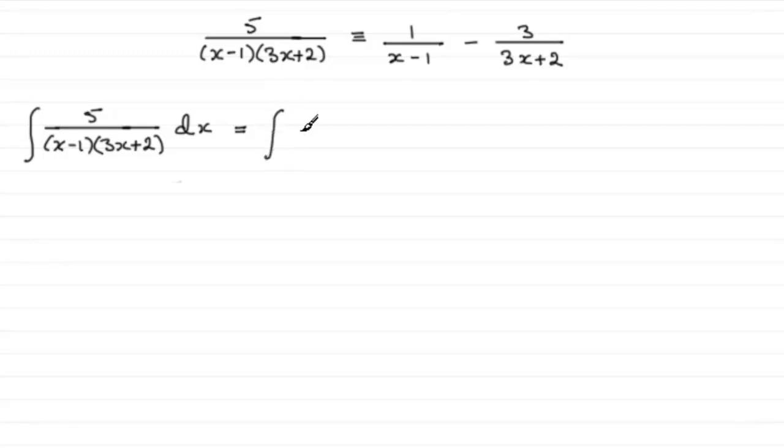So we've got, first of all, the integral of 1 over (x minus 1) with respect to x, and then we've got minus the integral of 3 over (3x plus 2) with respect to x.